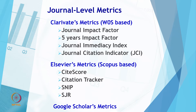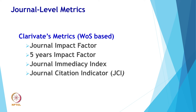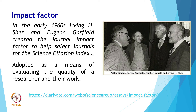Different journal-level metrics can be divided into three parts: first, Clarivate metrics which are based on the Web of Science database; second, Elsevier metrics which are Scopus-based; and third, some metrics from Google Scholar. Clarivate or Web of Science-based metrics include journal impact factor, journal immediacy index, and journal citation indicator (JCI). Impact factor was created in the early 1960s by Eugene Garfield and Irving Sher to help select journals for the Science Citation Index.